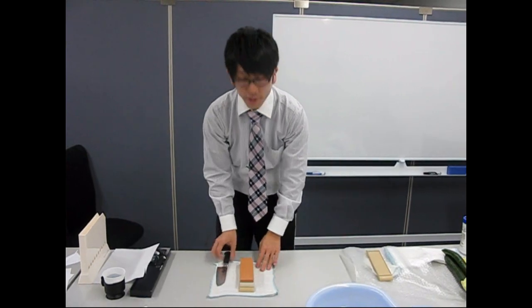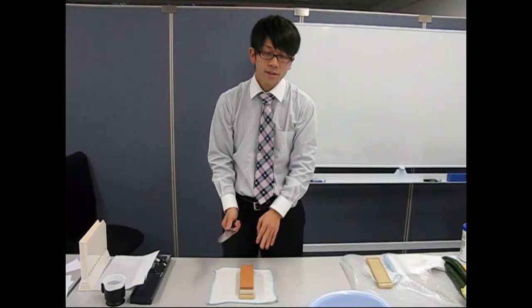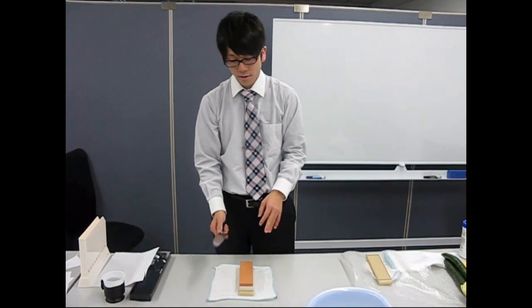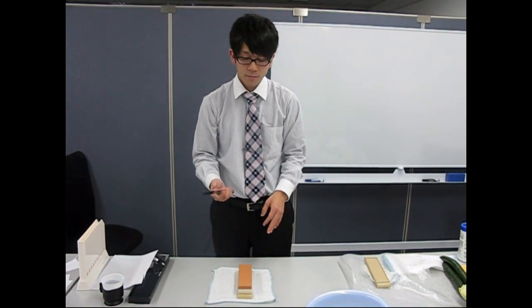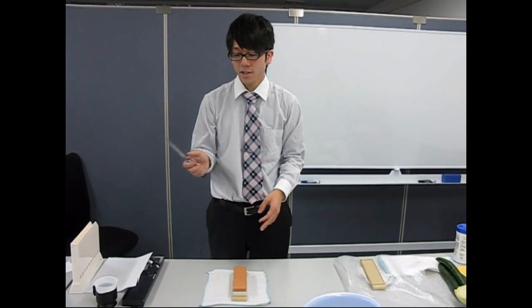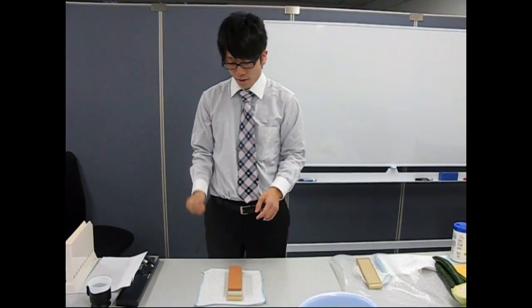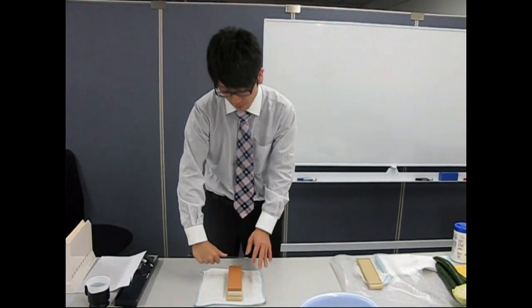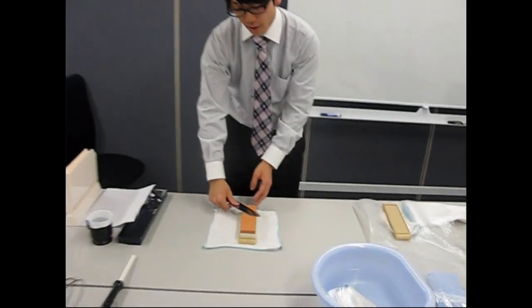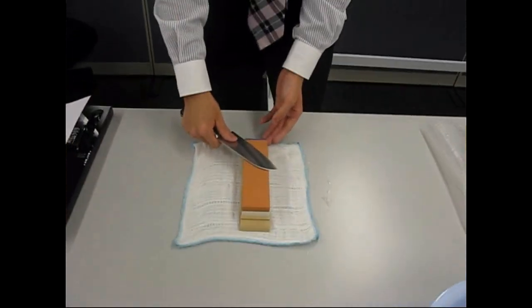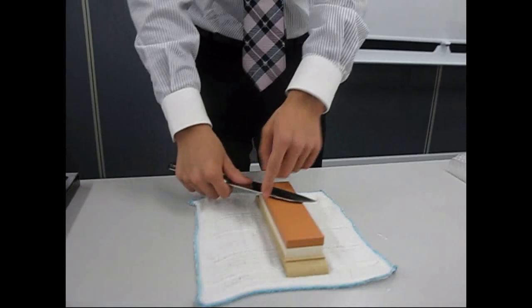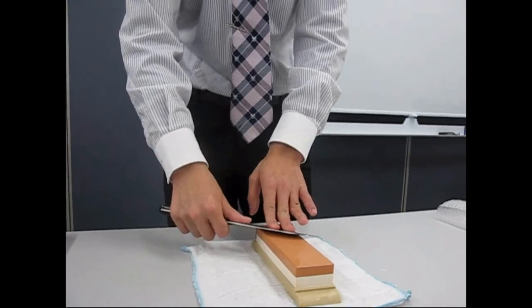First, start sharpening with the rough side. Hold the kitchen knife with your right hand, and support the blade area with your thumb. Place the kitchen knife 45 degrees towards the bottom of the wet stone, and set the angle at 15 degrees between the wet stone and kitchen knife, like this.